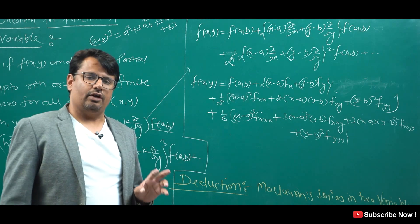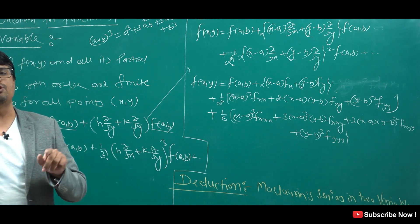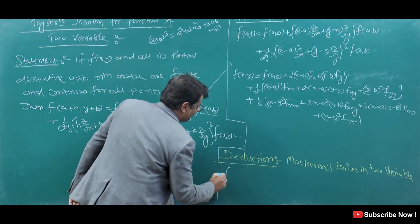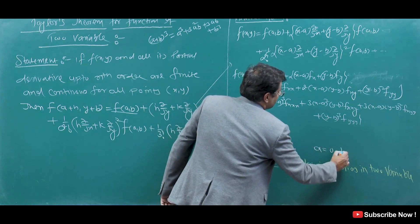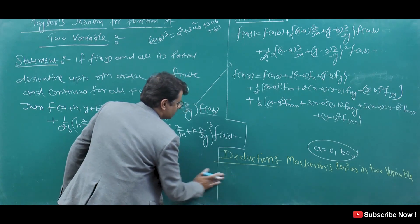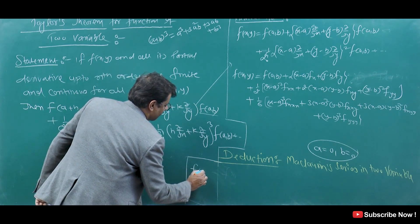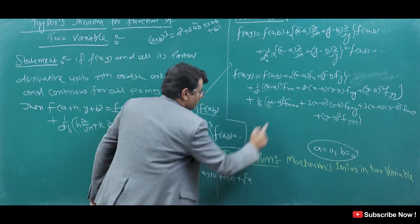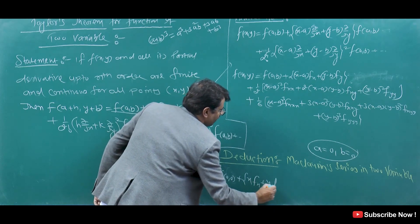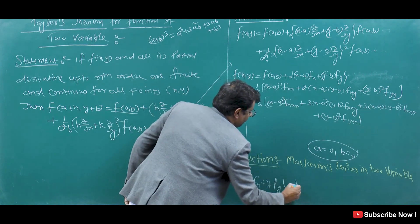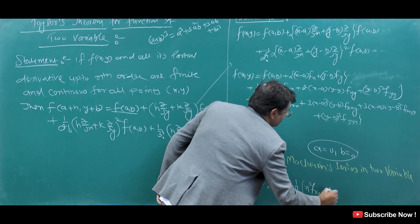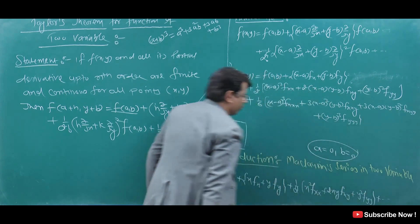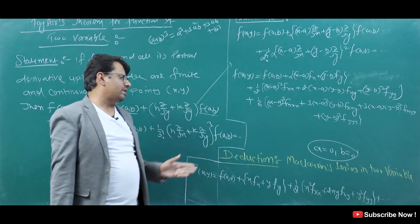This is the Taylor series at point (x, y). We will put the point as (0, 0). This is the deduction of Taylor series of a function of two variables. If we put the point (a, b) as (0, 0), we substitute zero here.